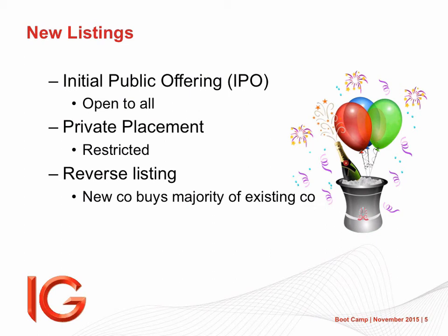Then sometimes you get a reverse listing. The JSE does allow it but they're not common. A little company with nothing much happening, a small market cap — they issue a whole bunch of new shares to a third company who essentially takes control and comes into the stock market that way. It's essentially a backdoor listing. The reason we don't see many of them anymore is that the acquiring company often finds a lot more rats and mice in the company they acquired than they expected. It's cheaper, but oftentimes not cheaper after you've run through it.